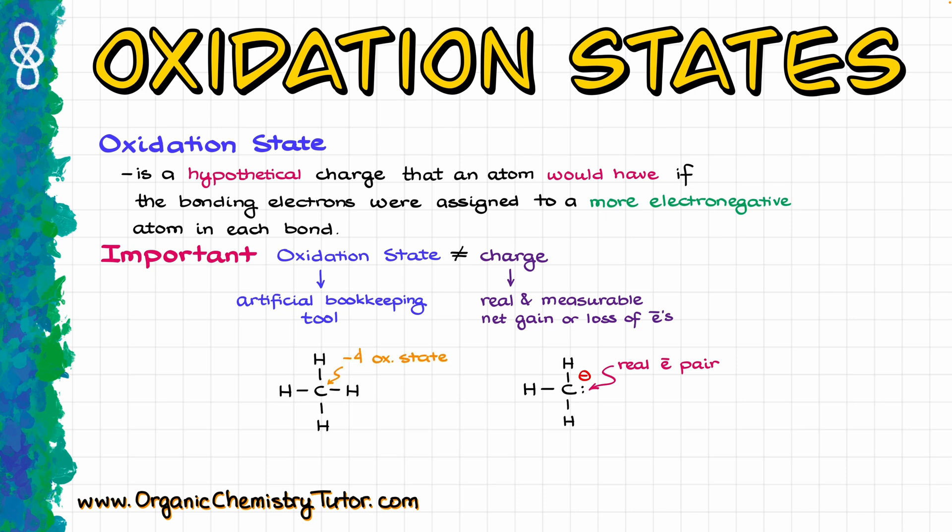Because of that, that carbon has a negative charge. However, when it comes to our oxidation states or oxidation numbers, those are artificial bookkeeping tools. They have nothing to do with the reality. So, if I look at something like methane, for instance, the oxidation state of carbon in methane is going to be negative 4. However, the charge of carbon in methane is going to be 0.